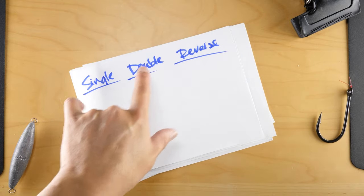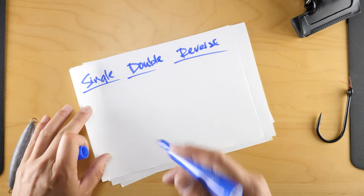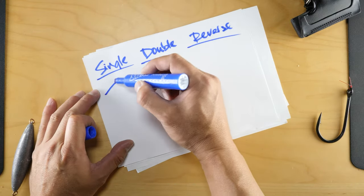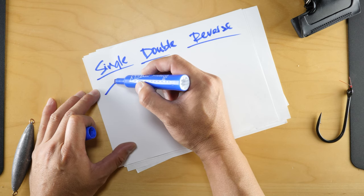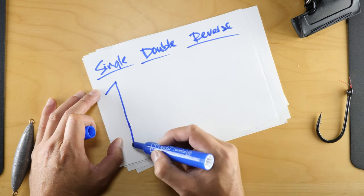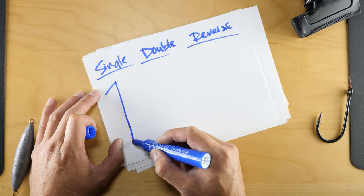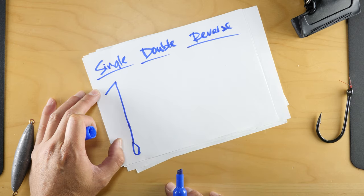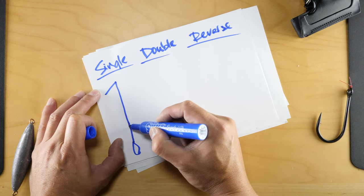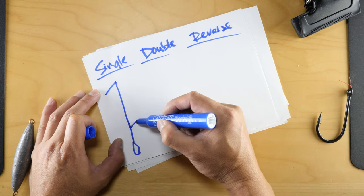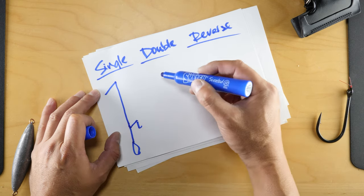You've got the single, double, and a reverse dropper loop. With the single, here's your rod, your main line going down, and on the bottom we're gonna have a surgeon's knot to a torpedo or a weight. We're gonna have one knot out with a single hook.